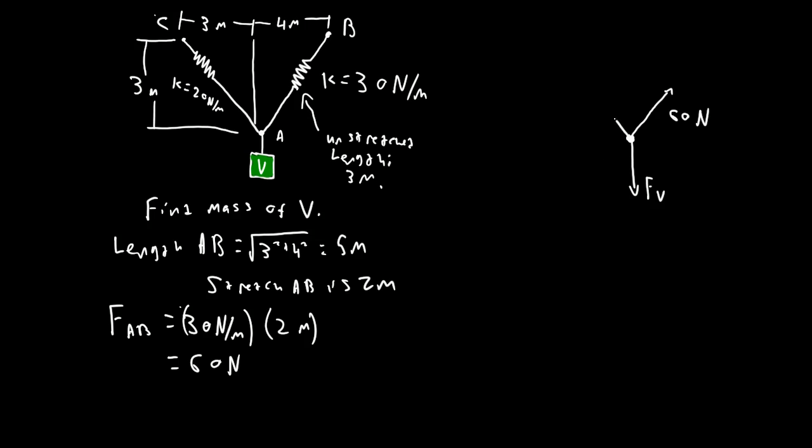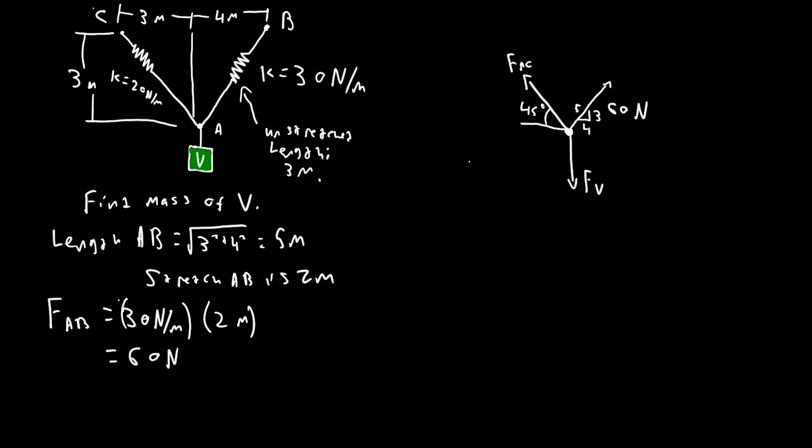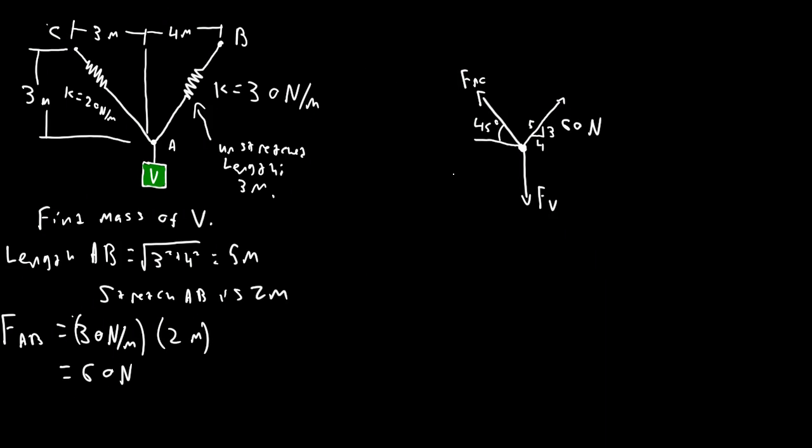And we have this, which is FAC, unknown, acting at 45 degrees. And we'll draw on the triangle here. This is 4, 3 and 5, a very common triangle. So this is a very easy solution to do. You don't have to do a lot to solve it.